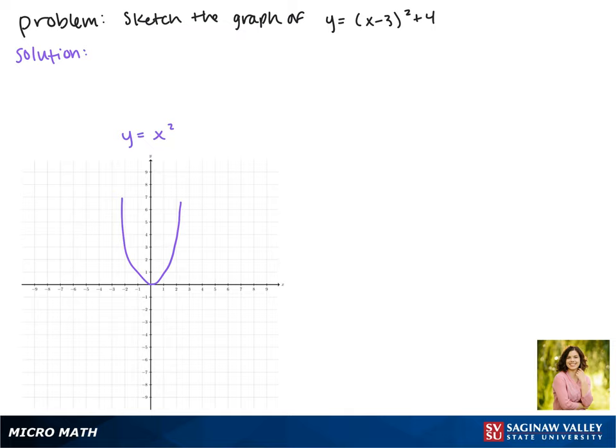There are no reflections here, so we'll start with translations. Since we're subtracting 3 from x, that moves our function three spaces to the right. Notice that now our vertex is at 3, 0.